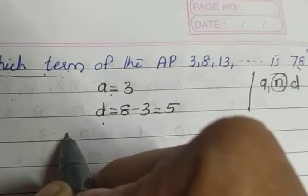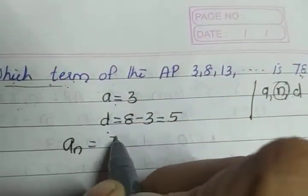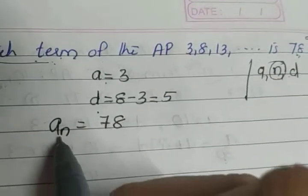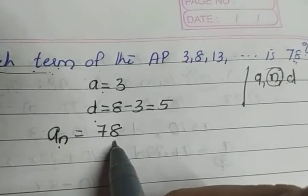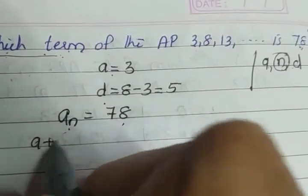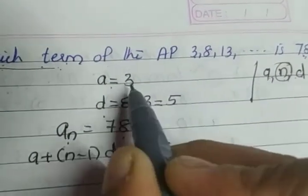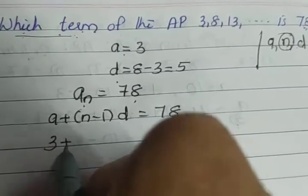So what we have to do is we have to take an as 78. Whenever the question is to find the value of n, we have to take an as the given value 78. What is an? What's the formula? a plus n minus 1 into d is equal to 78.